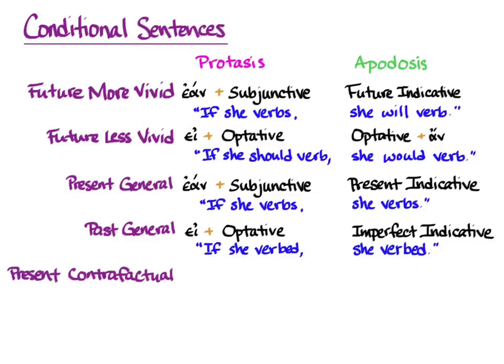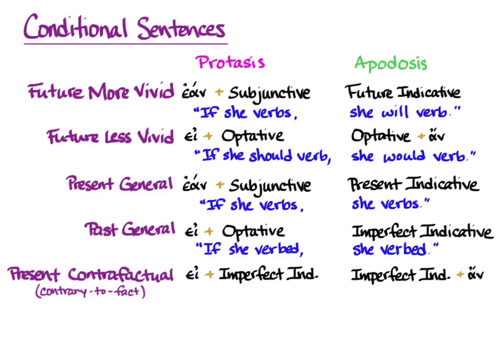The first of two remaining patterns is the Present Contrafactual, or contrary to fact. The assumption here is that the if-clause is not true — it's not a fact. But the writer really wants to tell you what would be happening if it were. This pattern is εἰ plus the imperfect indicative, and the imperfect indicative plus ἄν. The translation default is: 'if she were verbing, she would be verbing' — meaning, if she were verbing but she's not, she would be verbing but she isn't.